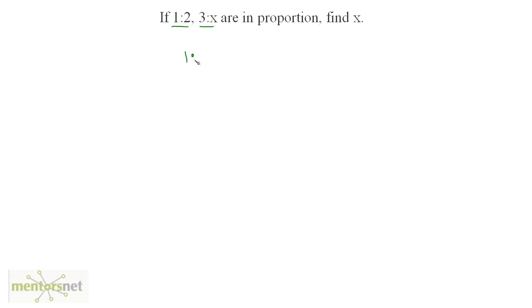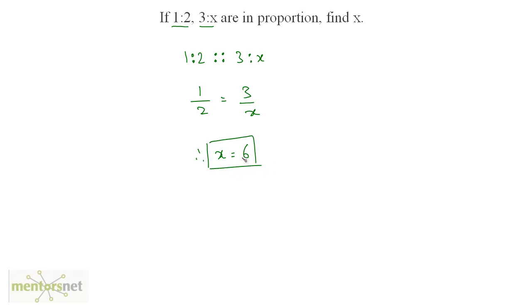Let us solve a problem. If 1 is to 2 and 3 is to x are in proportion, find the value of x. The ratio 1 is to 2 is in proportion with the ratio 3 is to x. Since these two ratios are equal, 1 by 2 equals 3 by x. Therefore, x equals 3 times 2, which is 6. The value of x is 6.